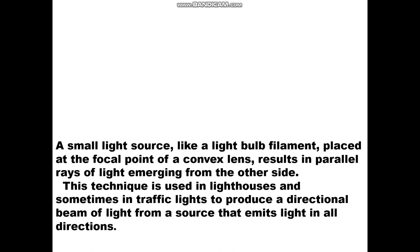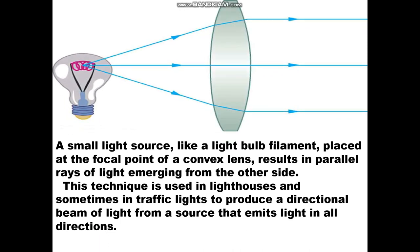A small light source, like a light bulb filament, placed at the focal point of a convex lens results in parallel rays of light emerging from the other side. That means if we keep a source of light at the focus, the light after passing through the lens will become parallel. This technique is used in lighthouses and sometimes in traffic lights to produce a directional beam of light from a source that emits light in all directions. Here you can see a bulb placed at the focus of the convex lens, so the light from the bulb is rendered as a parallel beam.